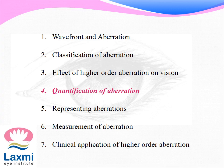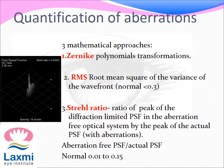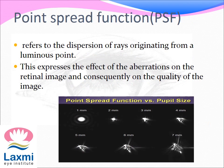Quantification of Aberration. There are three mathematical methods of quantifying aberrations. One, by the Zernike polynomial transformations. Two, by the root mean square or RMS of the variance of the wavefront. And three, by finding the Strehl ratio, which is the ratio of the peak of the diffraction-limited point spread function in the aberration-free optical system to the peak of the actual point spread function with aberrations. The point spread function or PSF refers to the dispersion of rays originating from a luminous point. This expresses the effect of the aberrations on the retinal image and consequently on the quality of vision. It is inversely proportional to the pupil size — that is, the more dilated, the higher the PSF and Strehl ratio, and the worse the image.